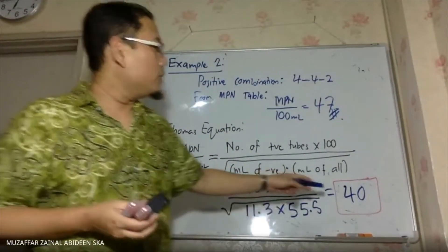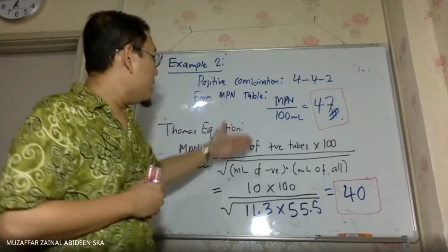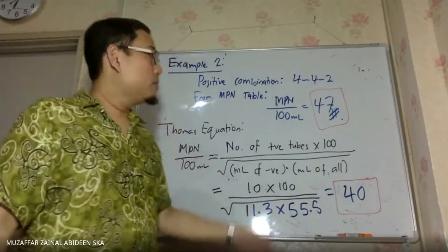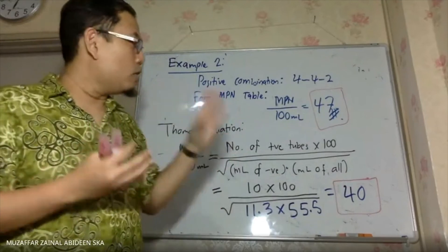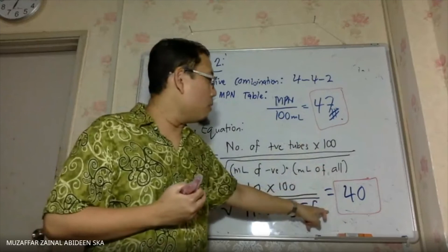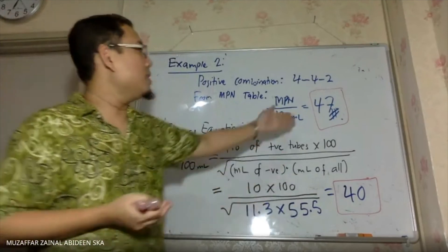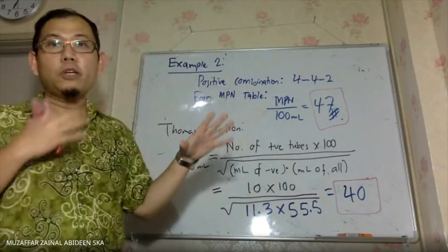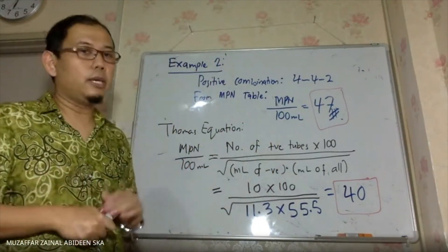Look at 40 and 47 — they are different, but do you think it's acceptable? Is there a difference between the MPN from the table and the Thomas equation result? It's okay. Although 47 and 40 seem far, it's not that far. If you got 47 from the table and 1400 from Thomas equation, that's totally different. If one is about 50 and the other about 80, that's still within the same range. The range is very different only if it's like 100 versus 1000 — that would not be okay.